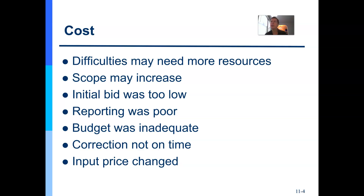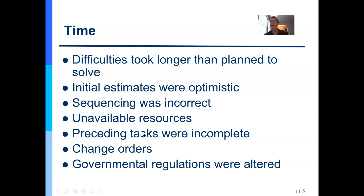Keep in mind you want to control scope creep. Remember the triple constraint — if I change one side of the triangle, the others will change too. If scope increases, it will lengthen my schedule and increase my cost. Maybe you bid too low; back to the resource management conversation, you want to make sure your bid is accurate to include your profit margin. Reporting is a key part of the control piece — what data do you draw, how often, in what format, and how do you present an executive summary to decision makers in a timely, proactive way.